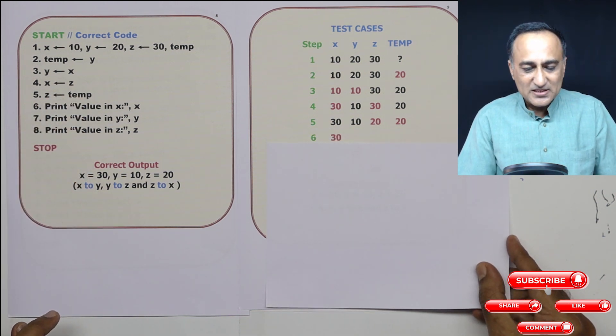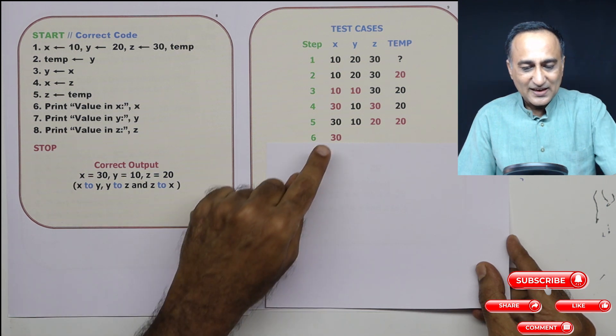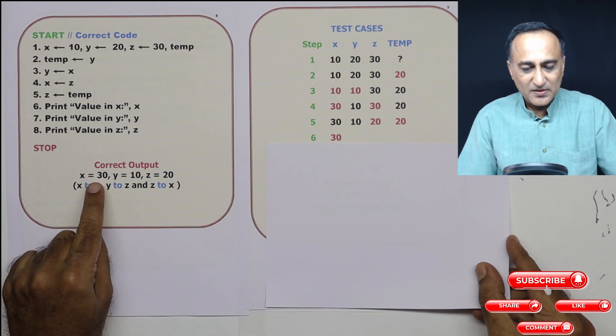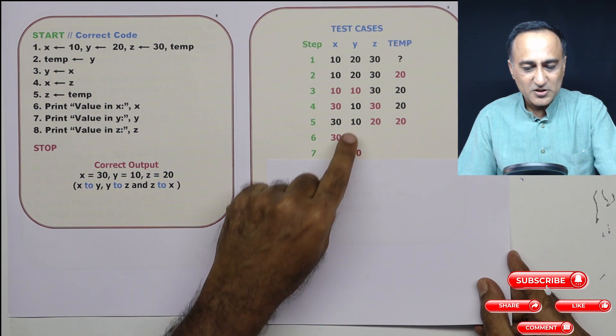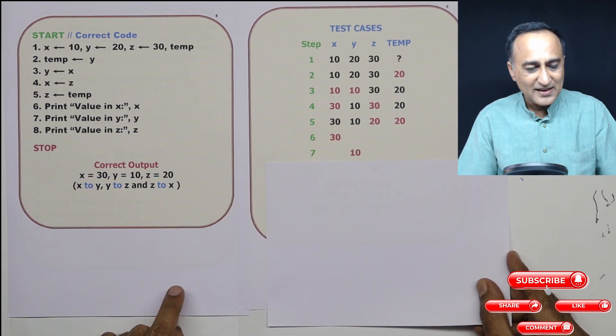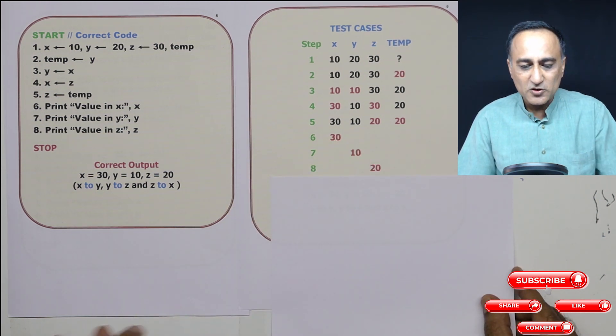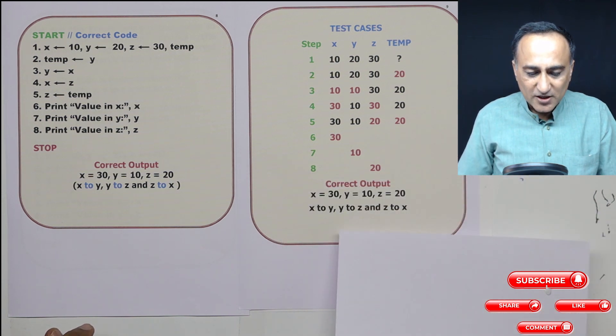Then here in step number six, I'm printing the value of x is 30, which is correct. Y should print as 10, which is also correct. And then finally, z should print as 20, which is also correct. So here if you see, this is the correct output.